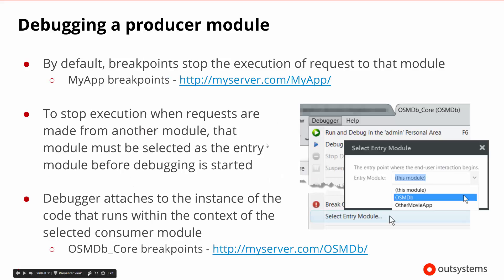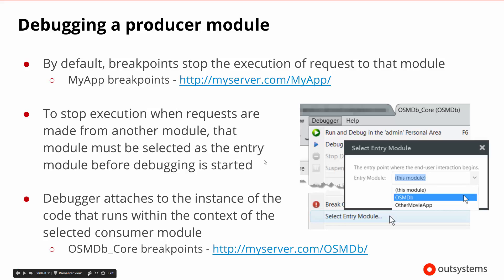When we talked earlier about having applications with multiple modules, by default breakpoints stop the execution of requests to the module. So if we have MyApp breakpoints and we're testing MyApp, the MyApp breakpoints will pause execution and allow us to do our debugging. If we're not working in this module to start with but we want to stop execution for this module's code, we can set the entry module for that particular set of code.